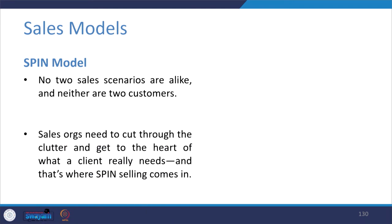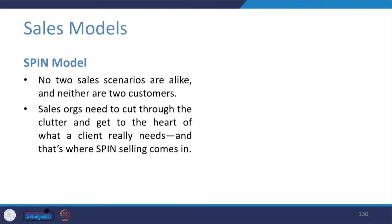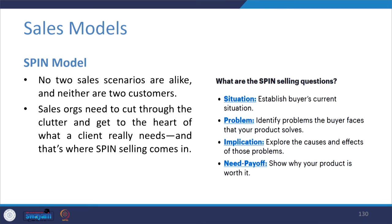The SPIN model addresses the fact that no two sales scenarios are alike. Sales organizations need to cut through the clutter and get to the heart of what a client really needs — that is where SPIN selling comes in. SPIN stands for: Situation — establish the buyer's current situation; Problem — identify the problem the buyer faces that your product solves; Implication — explore the causes and effects of those problems; and Need Payoff — show why your product is worth it.